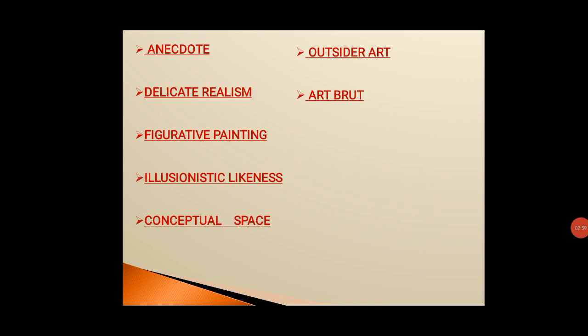So that was all about the given expressions: anecdote, delicate realism, figurative painting, illusionistic likeness, and conceptual space — which is often known as empty space — as well as outsider art and art brut. Now we will move towards the main detailed explanation of the text.